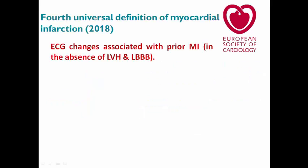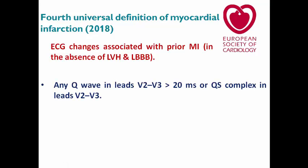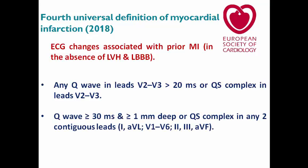In the fourth universal definition of myocardial infarction released in 2018, they include criteria for ECG changes suggestive of prior MI in the absence of LVH or left bundle branch block. First of all, any Q-wave in leads V2 or V3 of more than 20 ms, or a QS complex in these two leads. These two ECG leads are peculiar as they have a separate cut point for ST elevation and a separate cut point for the pathological Q-wave from the other ECG leads.